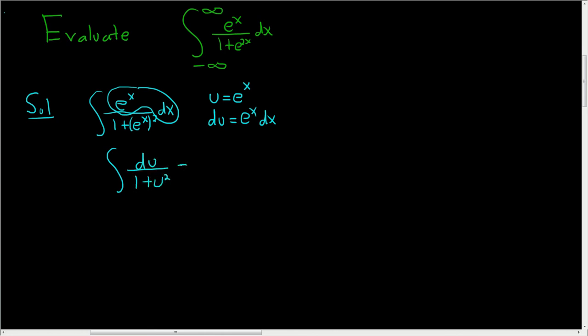And this is the familiar arctan formula so this is arctan of u plus a constant. And u was e to the x so this is the arctan of e to the x plus c.